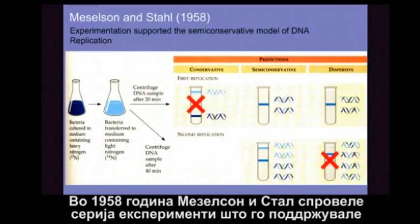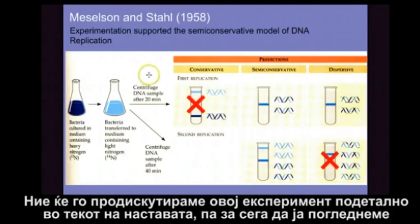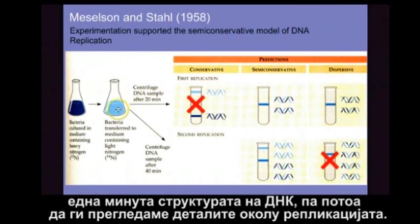In 1958, Meselson and Stahl conducted a series of experiments that supported the semi-conservative model of DNA replication. We'll discuss this experiment in more detail during class. So for now, let's give a one-minute review of DNA structure and then get into the details of replication.